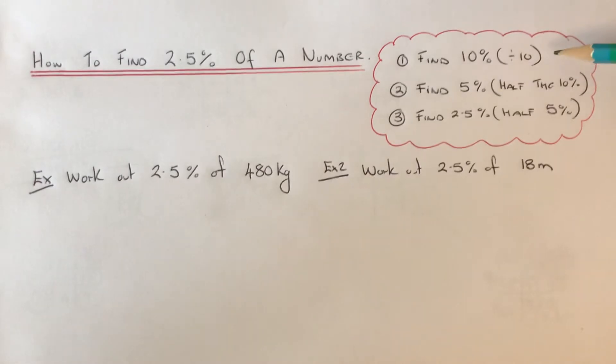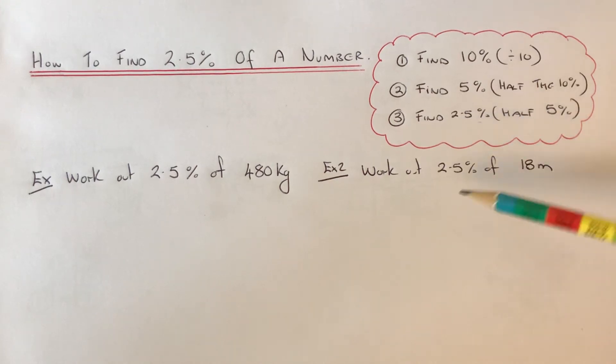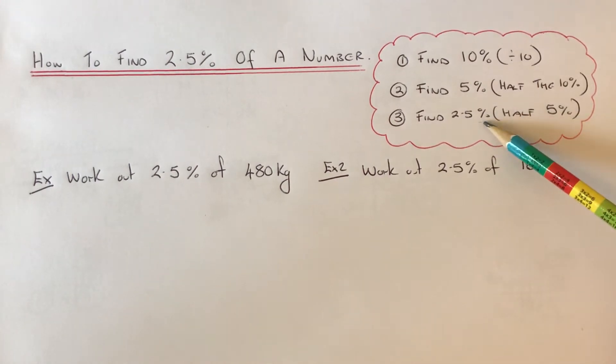So we can do this using the three steps over here. First of all, figure out 10%. You can do this by dividing the number by 10. Second step, work out 5%. Do this by halving the previous answer, so you half the 10%. And then once you have the 5%, you can half the number again, and that will give you 2.5%.